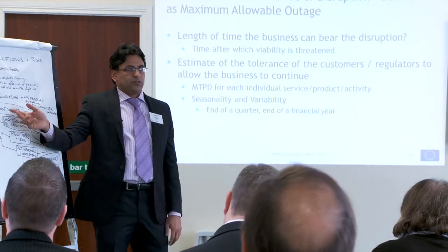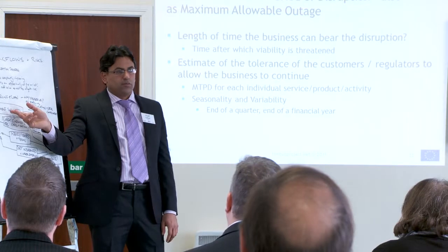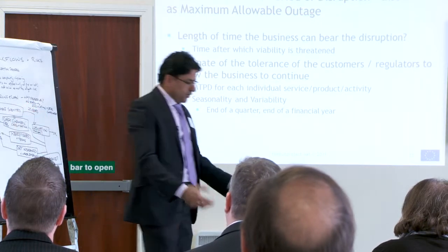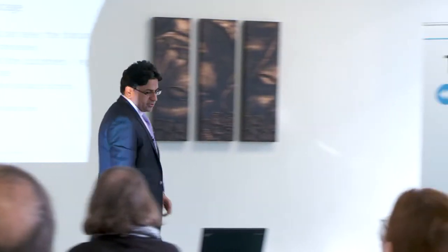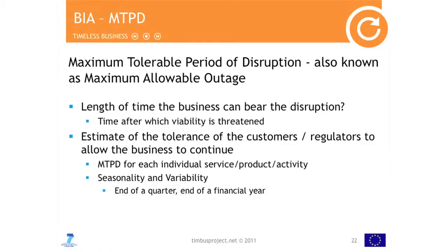We can get expert knowledge from the bank to tell us when an activity not being available for four days might put them out of business because they're not getting enough customers. MTPD is highly variable. For example, during quarter-end closing, certain services are only running at that time. If those services are not available in January or February — no problem. But if they're not available at end of March when I'm running quarterly reports, then they are critical ones at that time. So we have to look into MTPD for each of these activities, resources, and products.